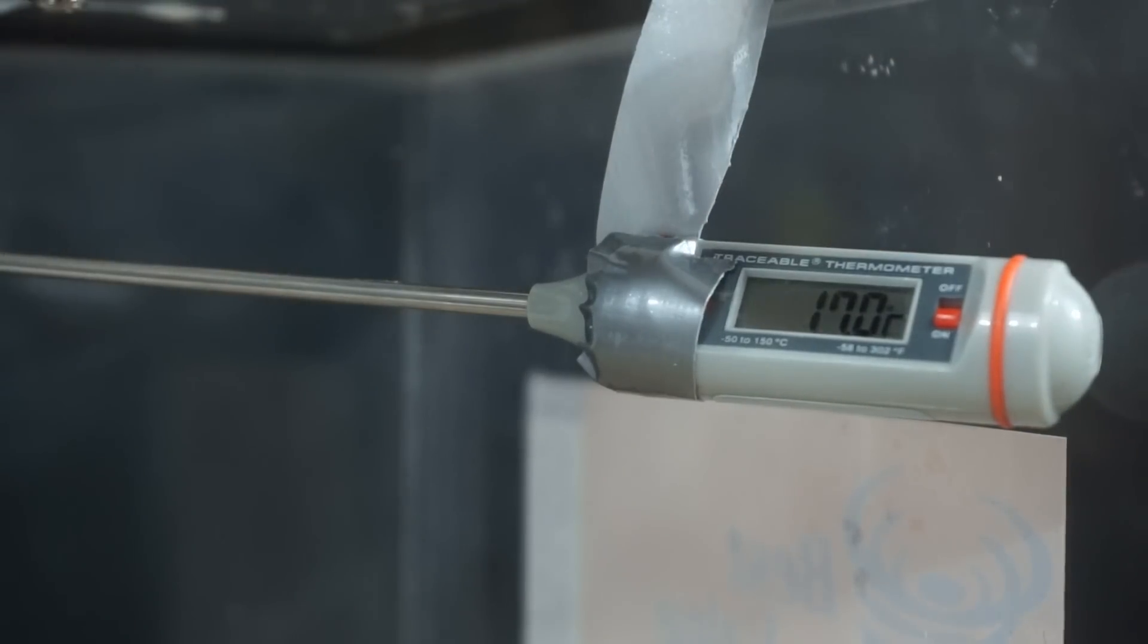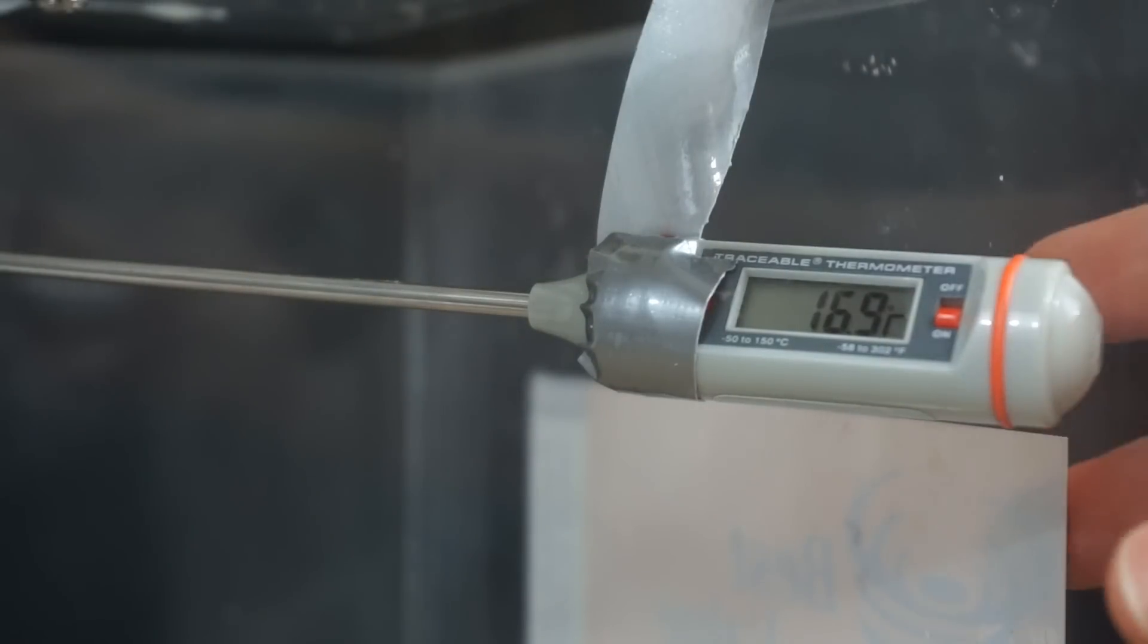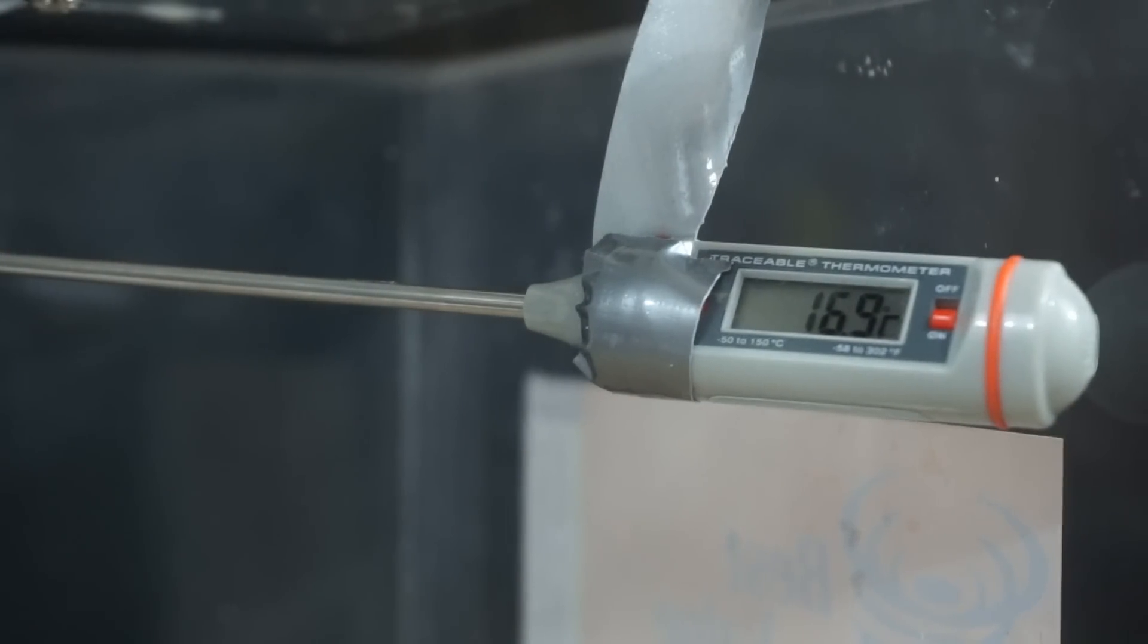Okay, let's keep an eye on this thermometer, turn on my vacuum chamber and see how it changes. So right now it's hanging out around 17 degrees Celsius. Okay, measuring the temperature of space. Three, two, one.